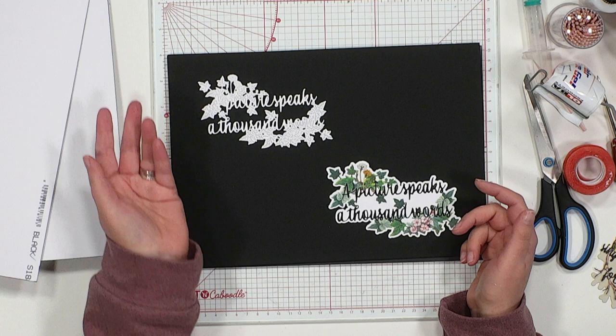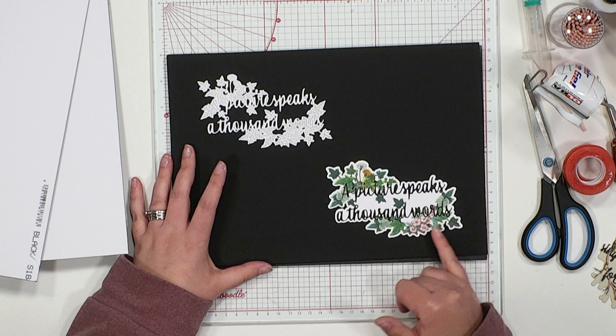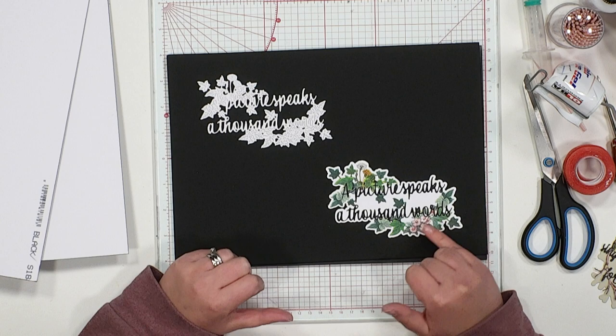The final die set within Words for a Loved One. Here we have A Picture Speaks A Thousand Words, surrounded, again, by beautiful, beautiful greenery.